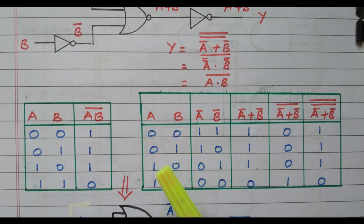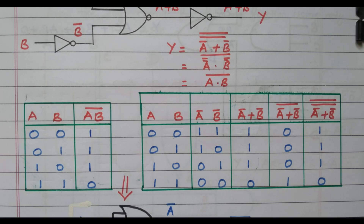In this video we discussed the NOR gate as a universal gate. Using the NOR gate we can perform the NOT operation, OR operation, AND operation, and NAND operation. The NOT operation is performed by connecting both inputs together as a common input. OR operation is performed by connecting the NOR gate at the output side. AND operation is performed by connecting the NOR gate at the input side. NAND operation is performed by connecting the inverter at both the input side and output side. We verified with both the expression and truth table.